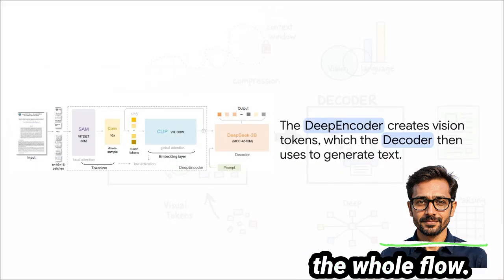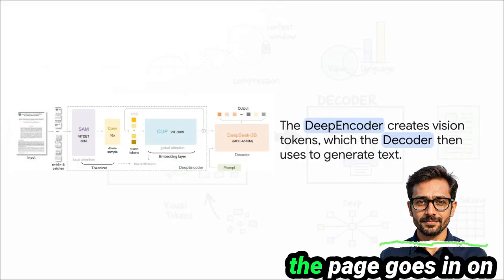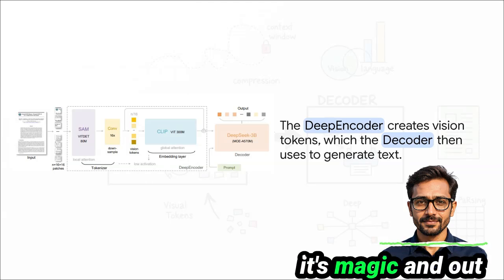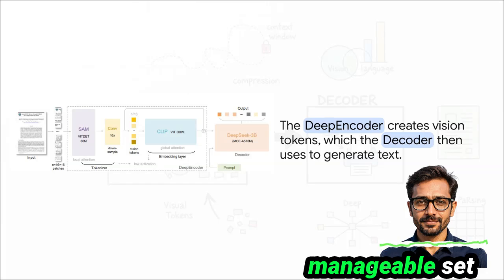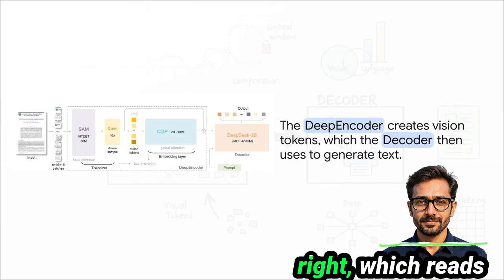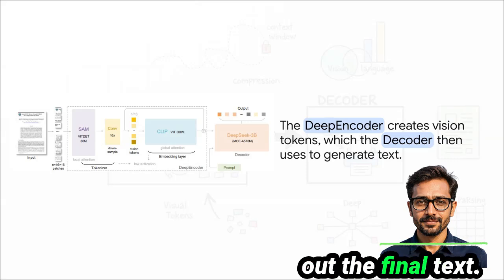And this diagram from the paper shows you the whole flow. See? The image of the page goes in on the left, right into the deep encoder. That thing works its magic, and out the other side comes this small, manageable set of vision tokens. Then, those tokens get passed over to the decoder on the right, which reads them and spits out the final text. Simple as that.